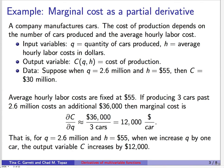Let's do an example with marginal cost as a partial derivative. A company manufactures cars, and the cost of production depends on the number of cars produced and the average hourly labor cost. The input variables are q, the quantity of cars produced, and h, the average hourly labor cost in dollars. The output is c, the cost of production. When q is 2.6 million and h is $55, then c is $30 million.